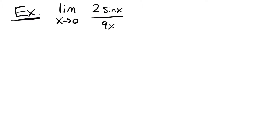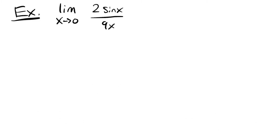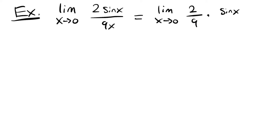When we look at these limits, we want to try to find our special limits hidden somewhere within here. As long as our x is approaching 0, we can look for our sine x over x and our 1 minus cosine x divided by x. In this case, we don't have any cosine, so we're going to be working with sine. I already see our special limit — sine x over x right there. So what we can do is split up this limit to have that coefficient of 2 ninths times that sine x over x. I'm going to rewrite this limit as the limit as x approaches 0 of 2 over 9 times sine x over x.